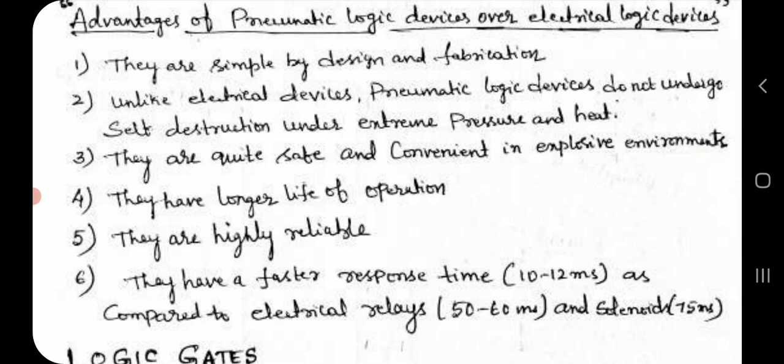Advantages of pneumatic logic devices over electrical logic devices: They are simple by design and fabrication. Unlike electric devices, pneumatic logic devices do not undergo self-destruction under extreme pressure and heat. They are quite safe and convenient in explosive environments. They have longer life of operation. They are highly reliable. They have a faster response time as compared to electrical relays and solenoids.